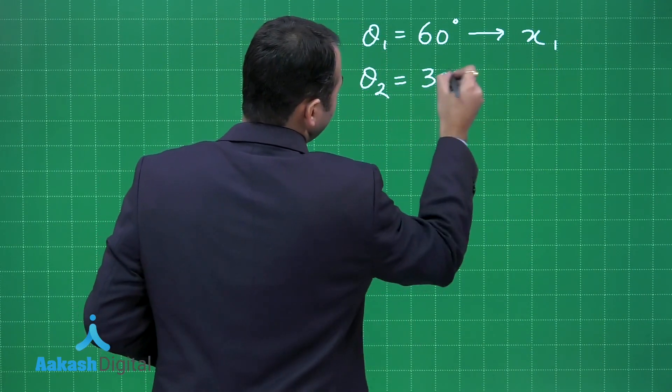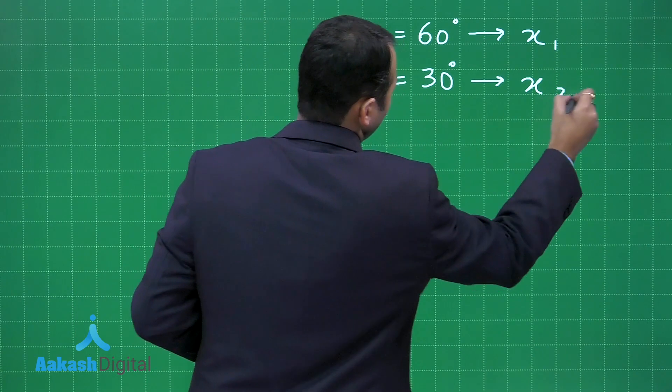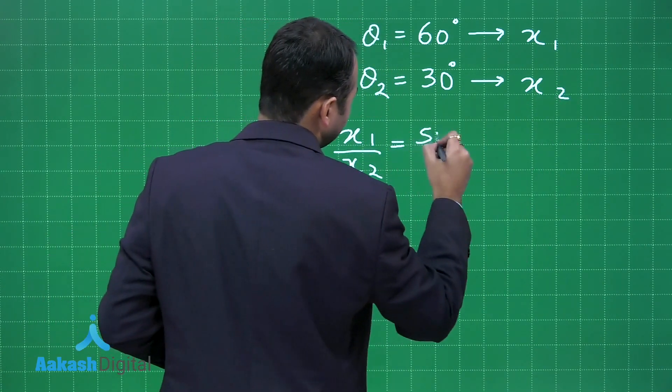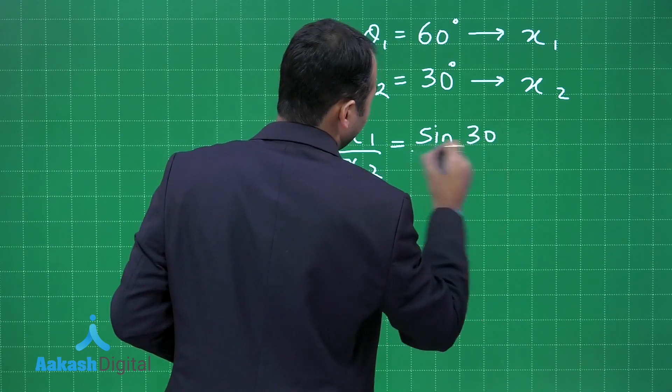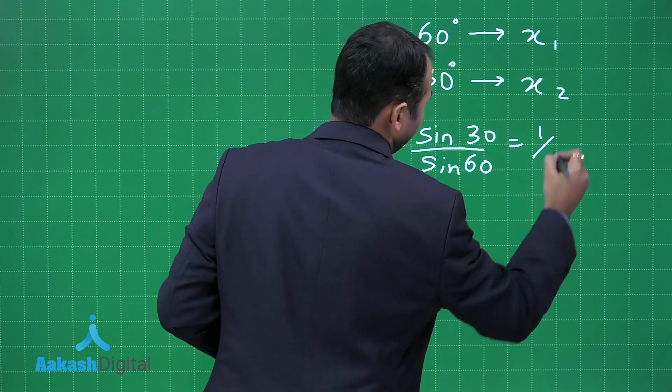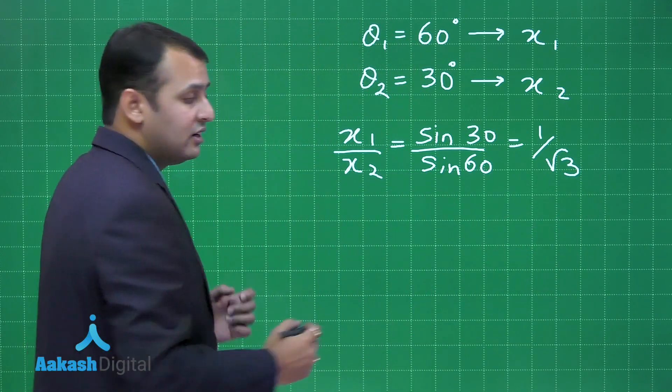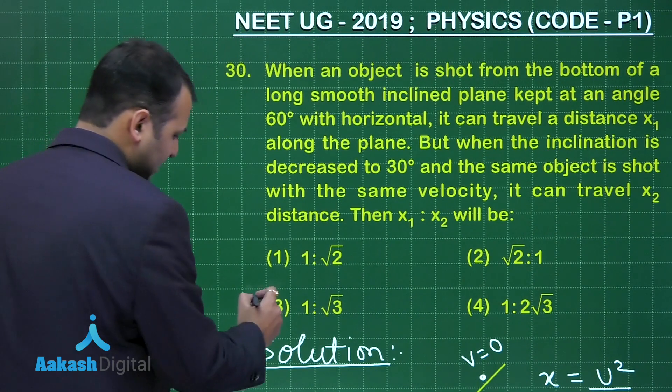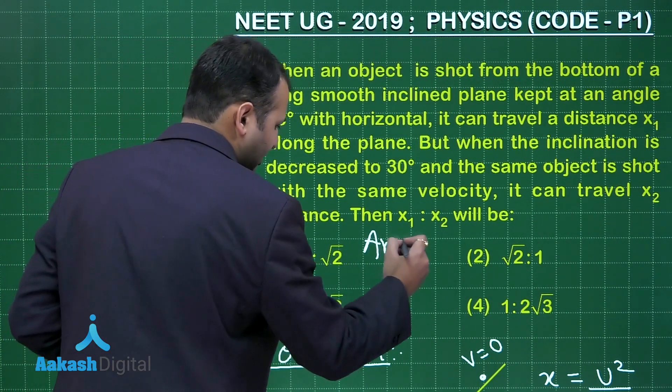So x₁/x₂ would be simply sin 30 divided by sin 60. You solve this you will get 1:√3. Let's see which is the best suited option here among the four options given to us. Yes, option number 3 is the right answer to this question.